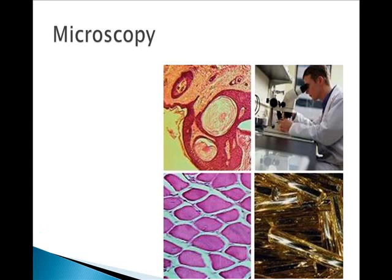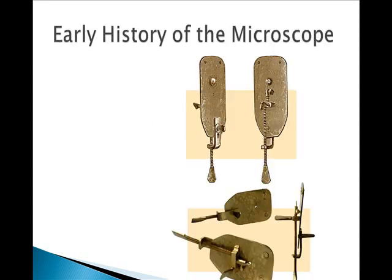Microscopy is the study of the world using microscopes. This is the first compound light microscope. It was perfected in the 1600s, and as you can see, it's basically a magnifying glass, and it was considered a simple microscope. Simple microscopes means that they have one lens. Compound microscopes means that they have two or more.